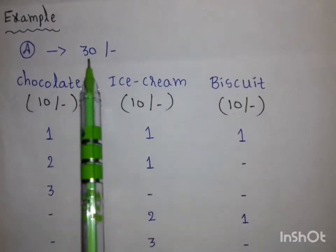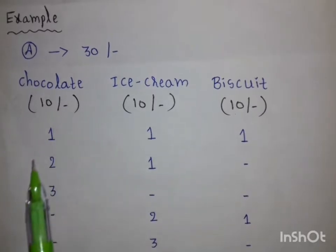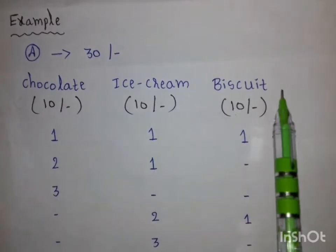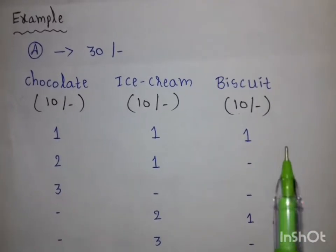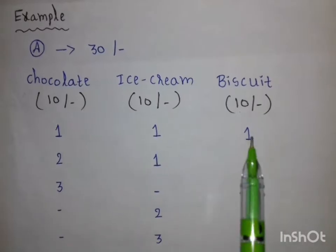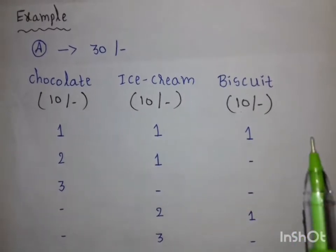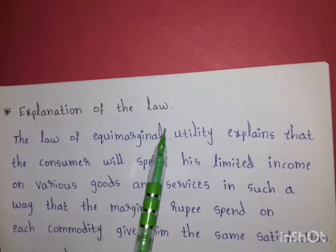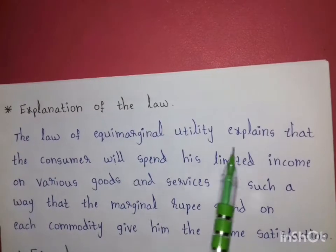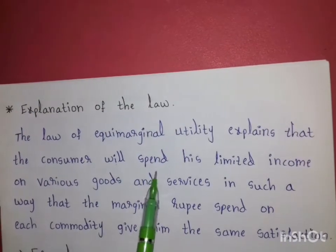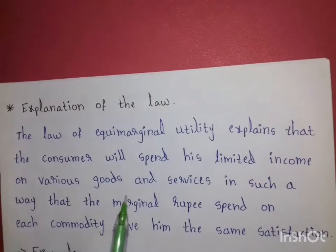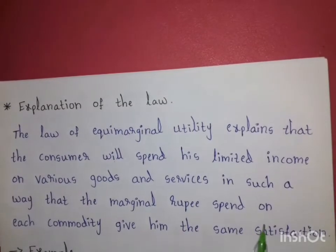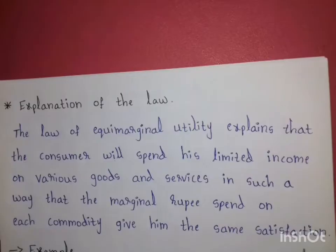The consumer will use the first 10 rupees to buy chocolate, then an additional 10 rupees to buy ice cream, and another additional 10 rupees to buy biscuit. The law of equi-marginal utility explains that the consumer will spend his limited income on various goods and services in such a way that the marginal rupees spent on each commodity give him the same satisfaction.